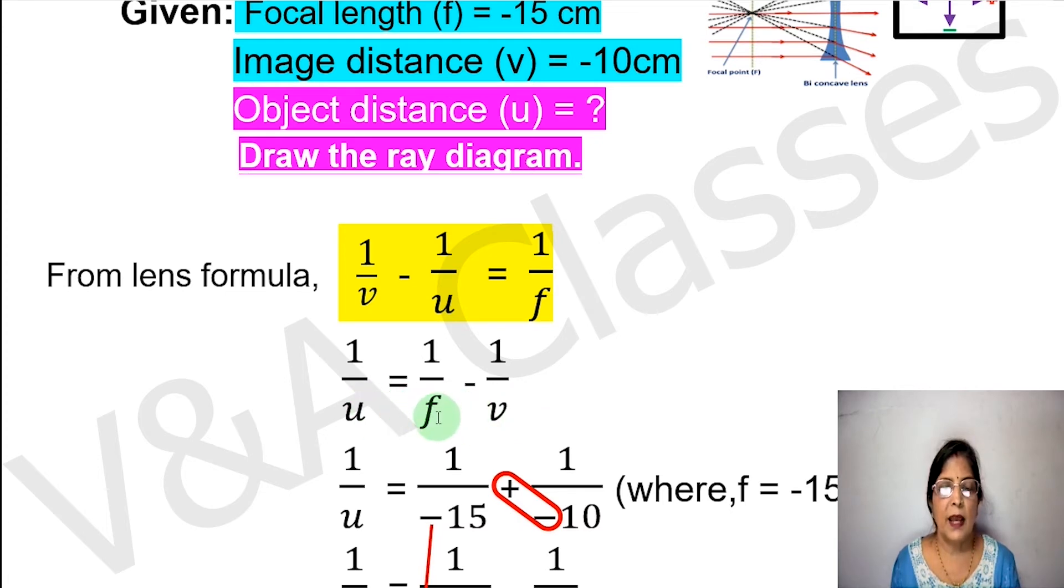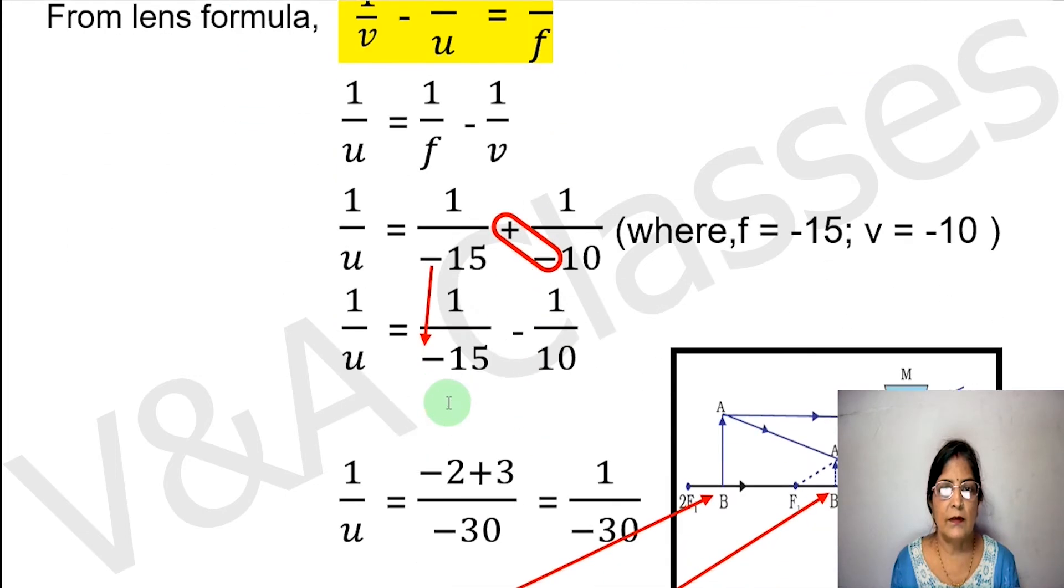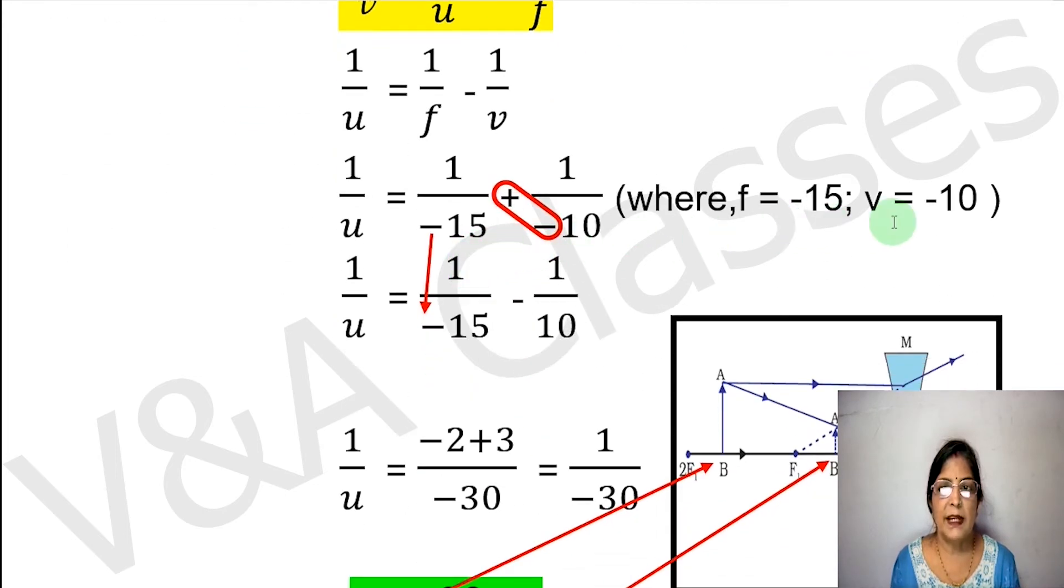Now we will put the values in this formula. The value of f is minus 15 and the value of v is minus 10. So our next step is 1/u equals to 1/minus 15 plus 1/minus 10.